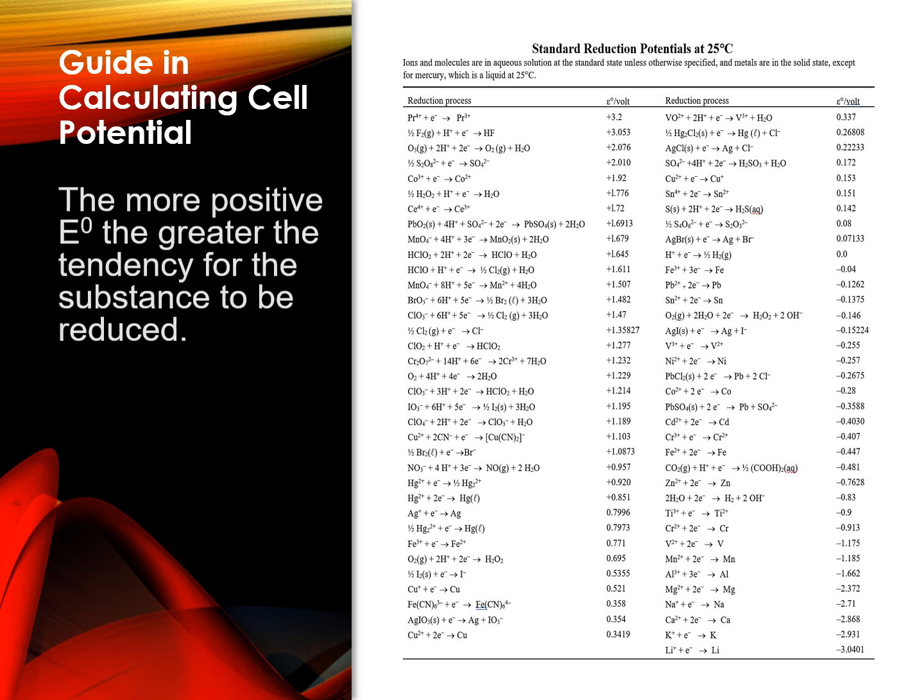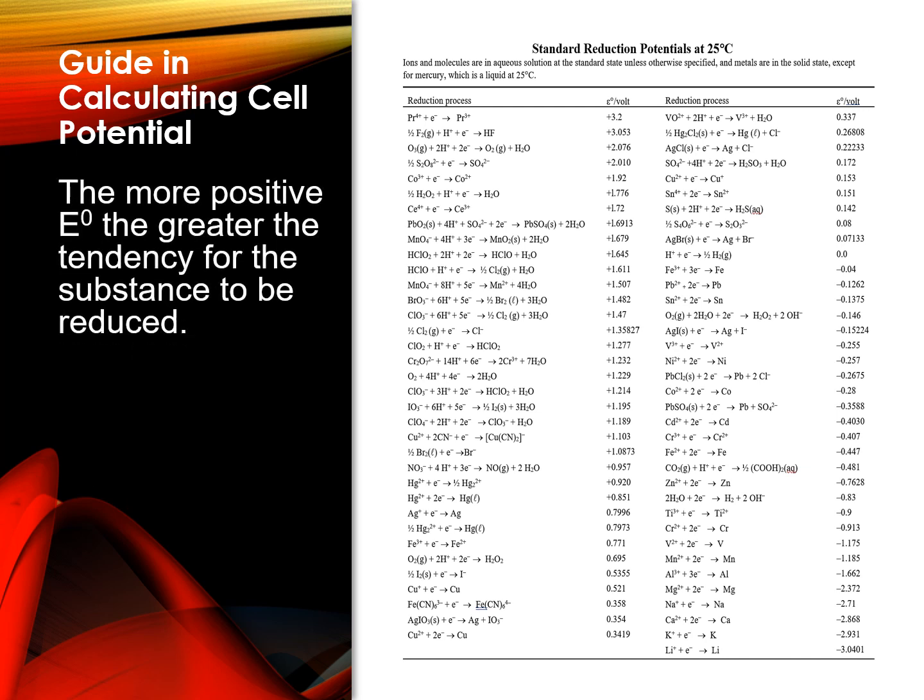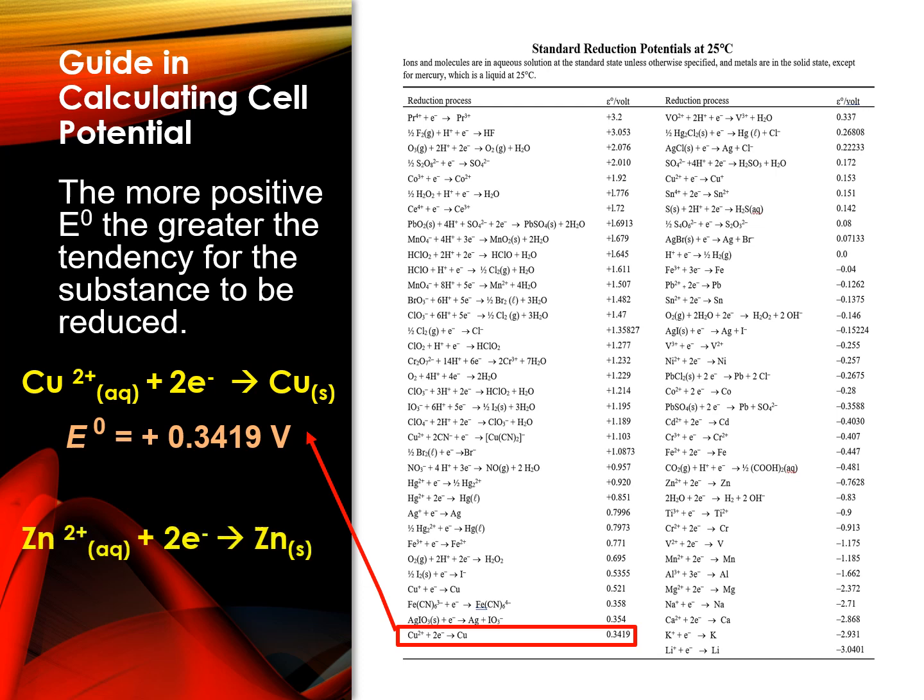FYI, the more positive cell potential, the greater the tendency for the substance to be reduced. So, given the half-cell reaction Cu2+ plus 2e- into Cu, the table also shows that the standard reduction potential is equal to positive 0.3419 volts. On the other hand, for Zn2+ plus 2e- into Zn, the standard reduction potential is equal to negative 0.7628 volts. Negative 0.7628 volts is lower than positive 0.3419 volts. Thus, Cu2+ is a stronger oxidizing agent, meaning it has the greater tendency to be reduced than Zn2+.